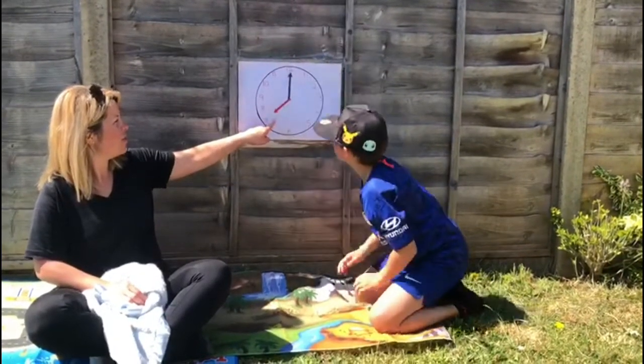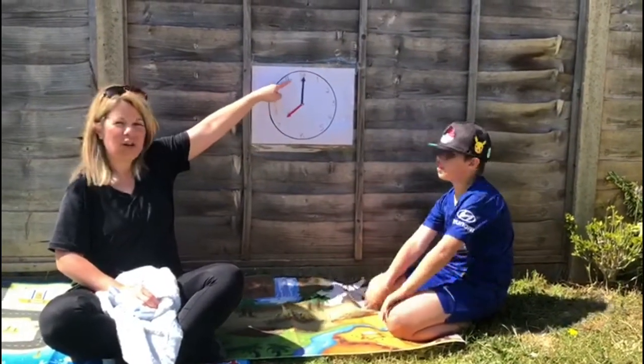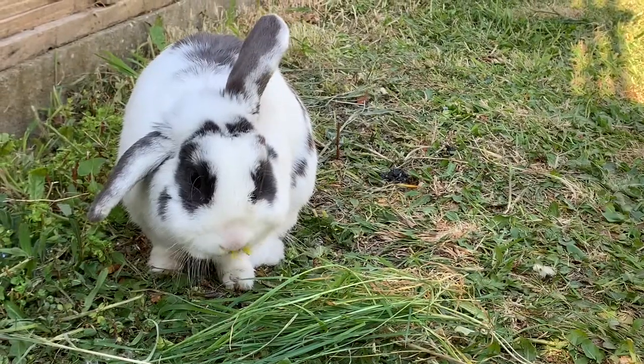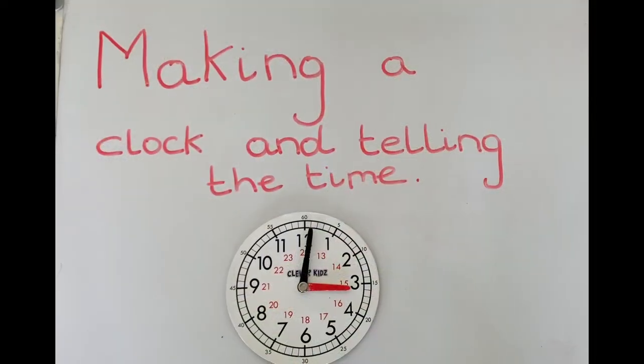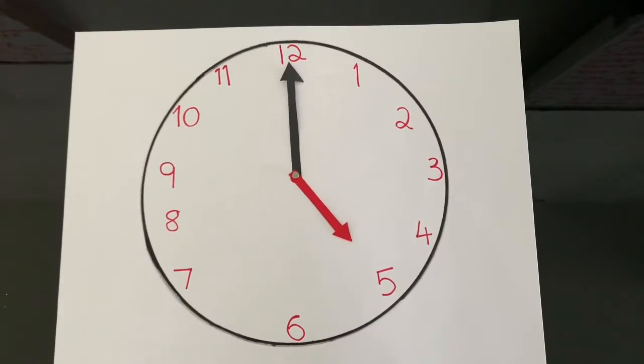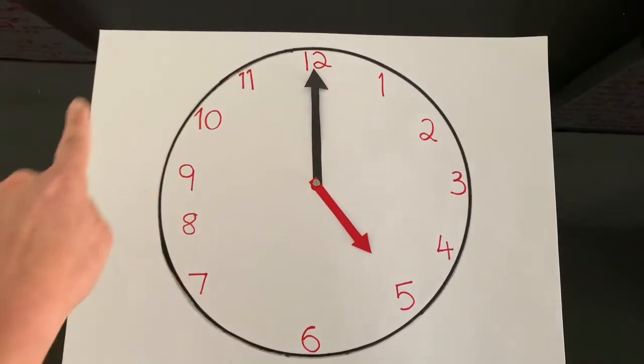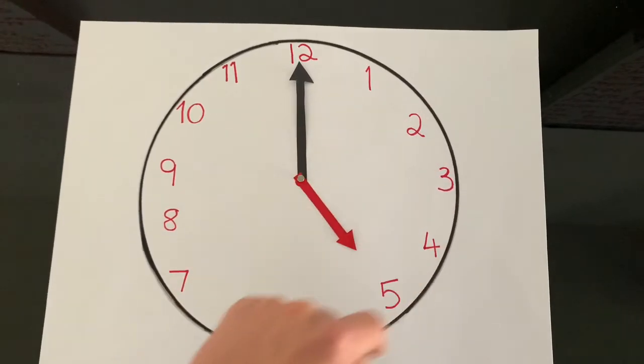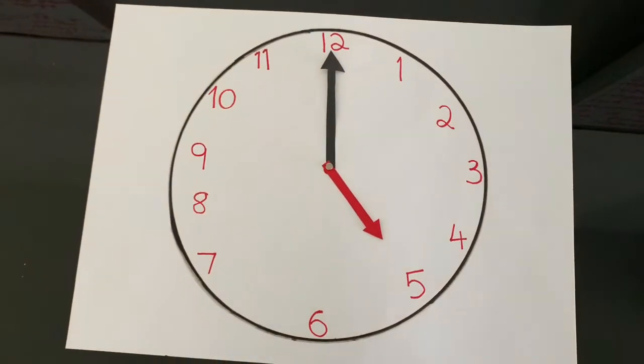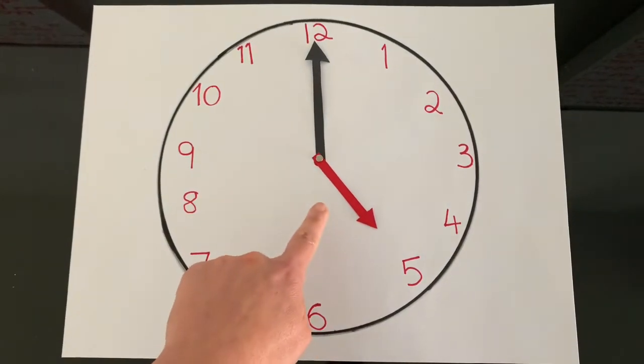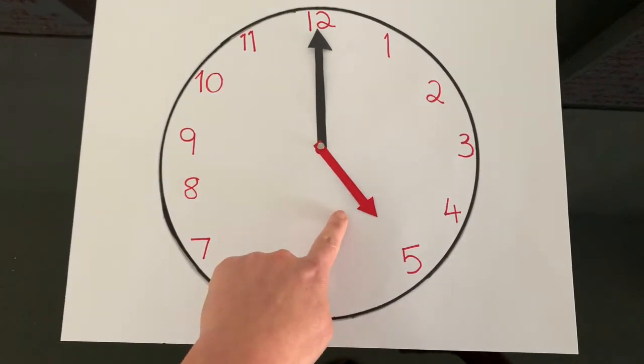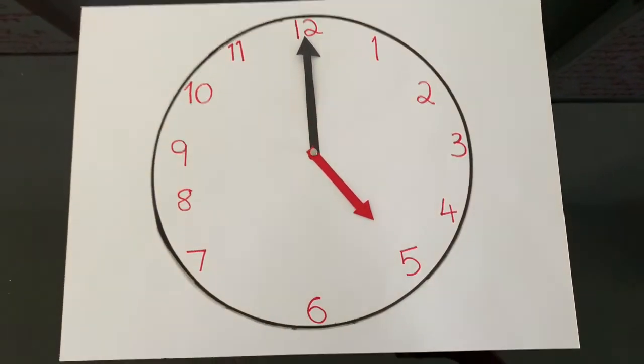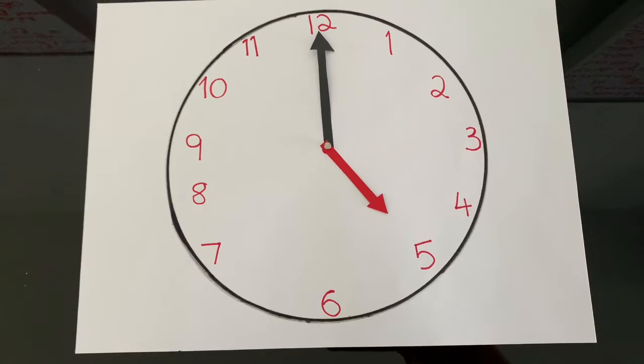And the longer hand on the 12, and bye from Jasper, he's enjoying his lunch. So I'm going to use this clock that I made earlier. I used a plate to draw around it and then after I write the numbers 1 all the way through to 12. I used red card to cut out my shorter length arrow and black card for the longer arrow.